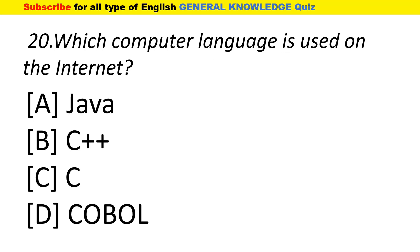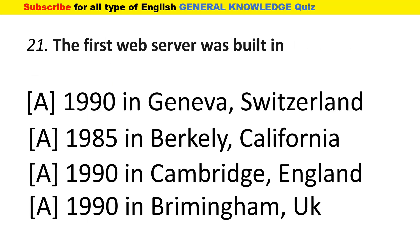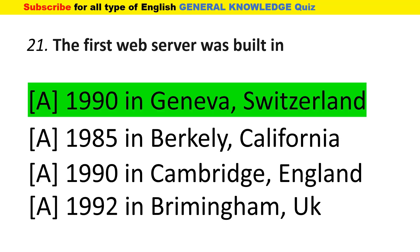Which computer language is used on the internet? The answer is that the World Wide Web was invented in 1990 in Geneva, Switzerland.